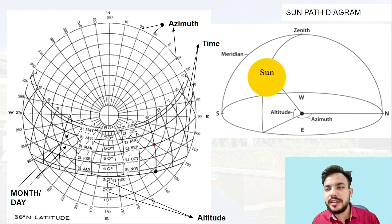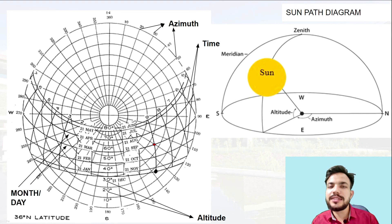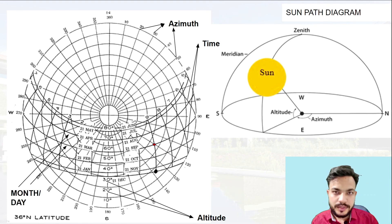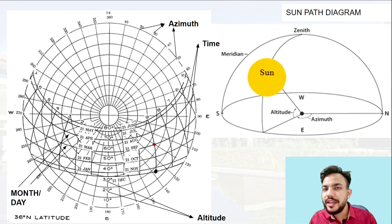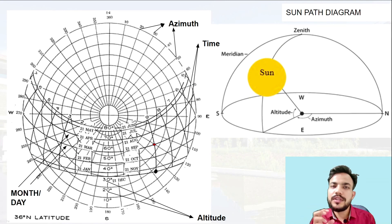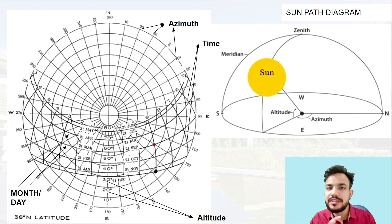After knowing all this, the sun path diagram is actually used for incorporating seasonal variation in building planning, for the comfort of the occupants inside the building. If you are able to manage your building planning according to the movement of the sun, then you are a clever planner and a clever civil engineer. Thank you, this is all for this video.